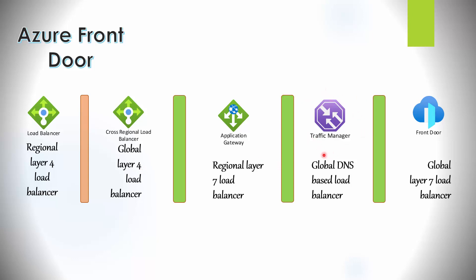For completeness, there's also Traffic Manager, which is a global DNS-based load balancer relying on DNS capabilities. Because it relies on DNS, it has DNS-specific limitations, such as it does not fail over as instantly as Front Door. Front Door fails over instantly, whereas DNS relies on specific DNS timeout values to expire before it can fail over.